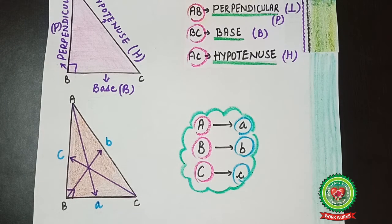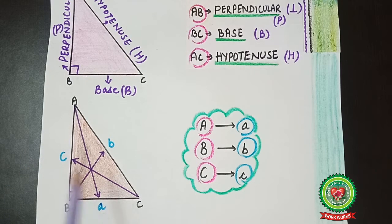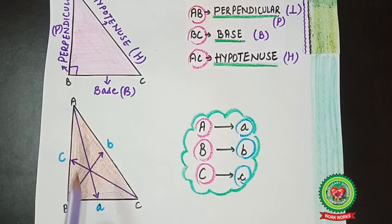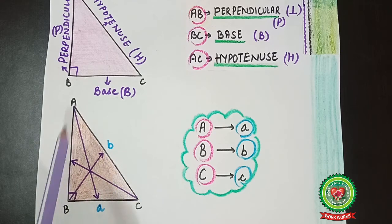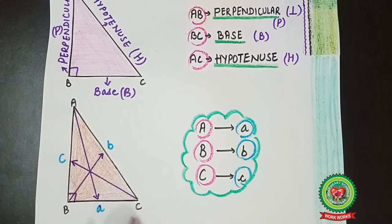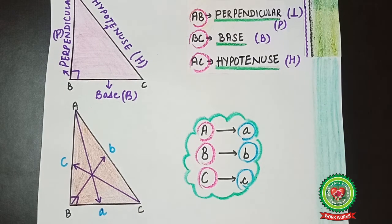There is one more method to express the sides of the right-angle triangle. A, B, C are the three vertices of the triangle. Here BC can be represented by small letter 'a', which is opposite to vertex capital A. Similarly, AC can be expressed as small letter 'b', opposite to capital B, and AB as small 'c' because it is opposite to vertex capital C. Some questions in your book use small a, small b, and small c, but we will proceed with capital P, capital B, and capital H.